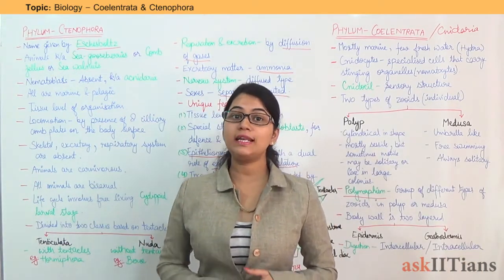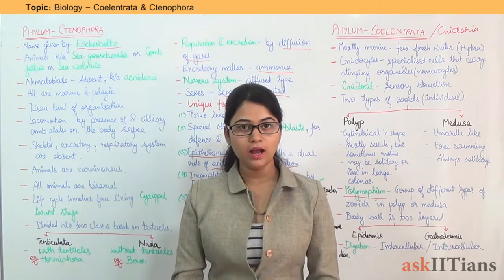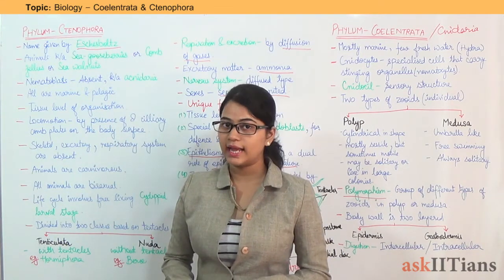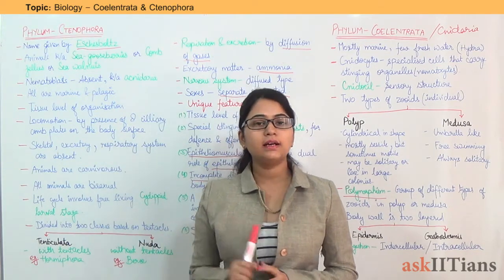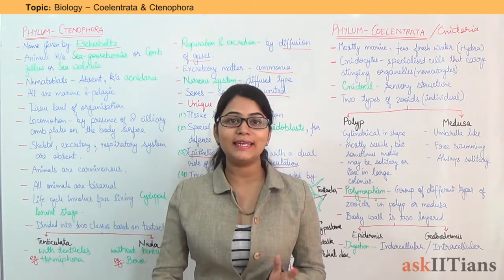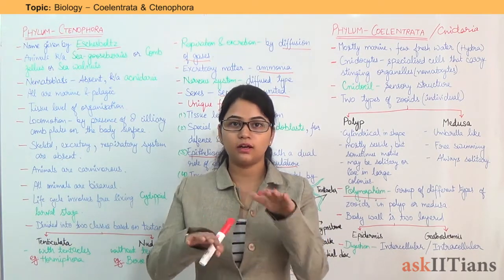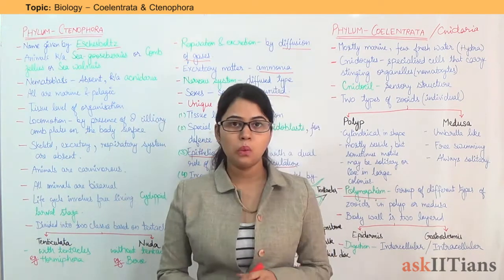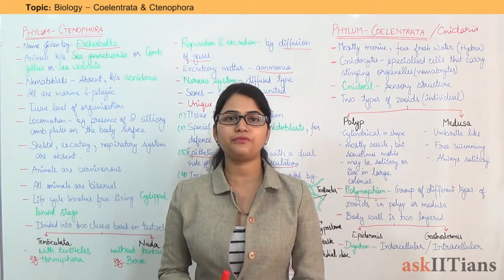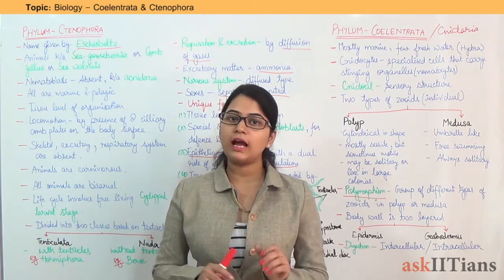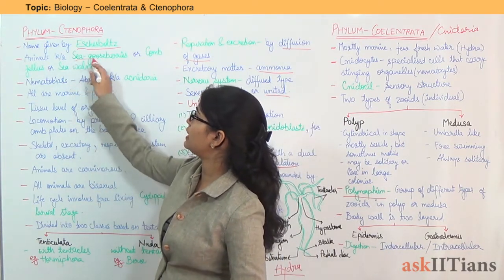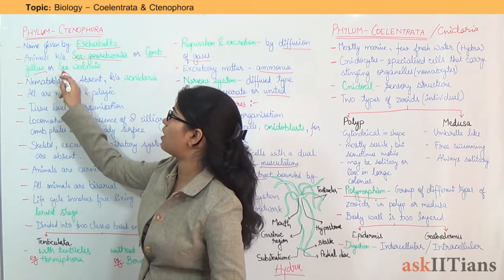Now moving on to the next phylum — Ctenophora. This name was given by the scientist Eschscholtz. The animals under Ctenophora are known for their beauty and delicacy. The comb plates of Ctenophora give the effect of a rainbow in the presence of sunlight, looking beautiful when sunlight falls over their comb plates. The animals are known as sea gooseberries, comb jellies, or sea walnuts.